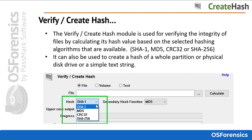SHA-1 and MD-5 algorithms have been the standard in the forensics field for many years, but both have technically been broken in lab environments and therefore are not 100% collision resistant. Keep in mind also that CRC-32, which stands for Cyclic Redundancy Check 32, is technically not a cryptographic hash function and should not be used for security purposes. Due to its small size, however, it is useful for quickly detecting random file corruption when transferring files over networks, as opposed to protecting against deliberate alteration by third parties.